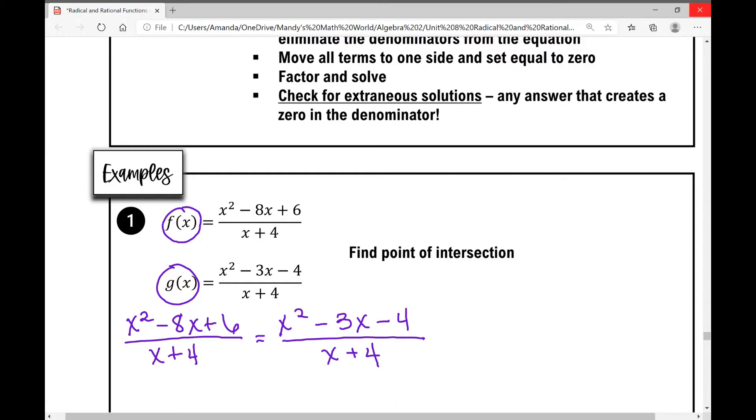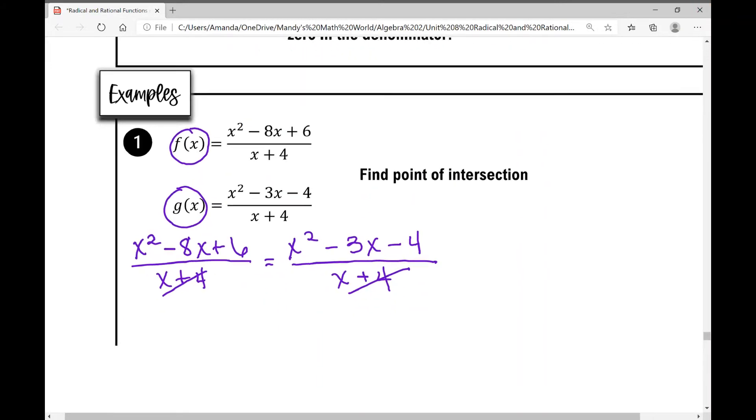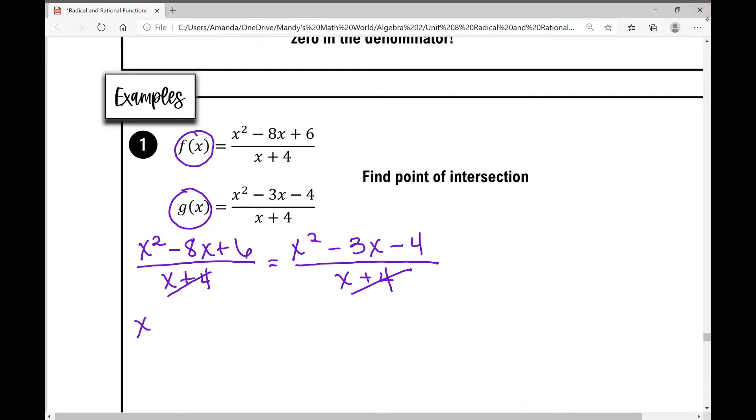So whenever I have two equations that have a denominator that is the same, I can just eliminate those denominators and set the numerators equal to each other. x squared minus 8x plus 6 equals x squared minus 3x minus 4. So that's really what you want to do. You want to have fractions on both sides of the equal sign that have the same denominator so you can get rid of that denominator.